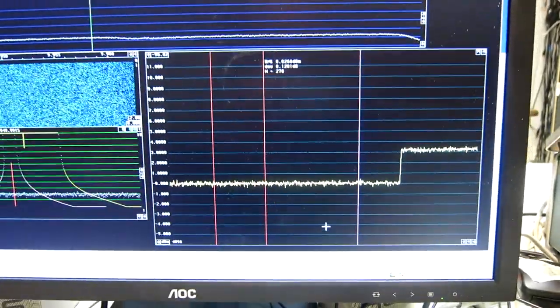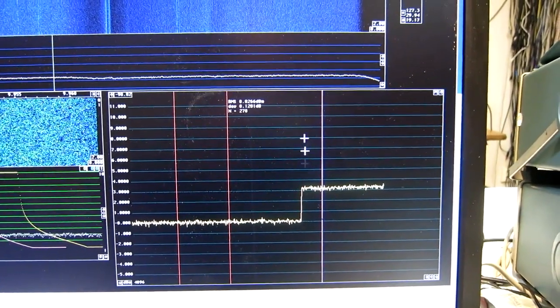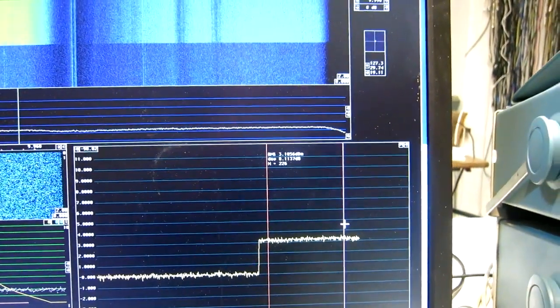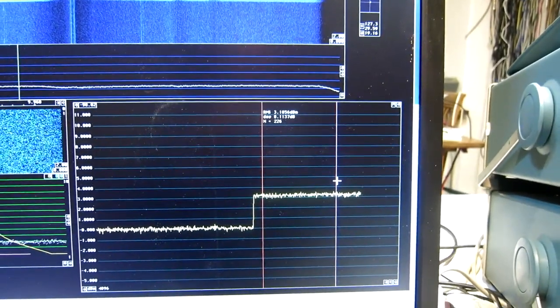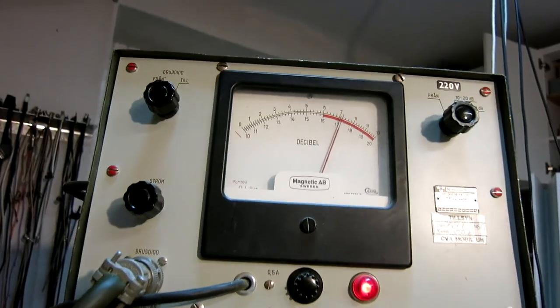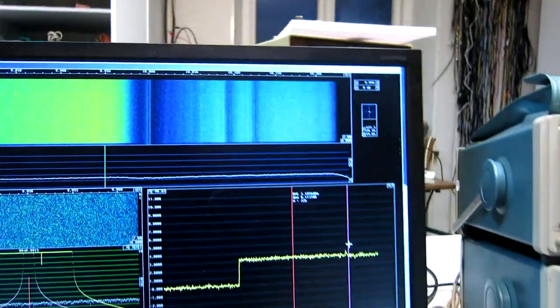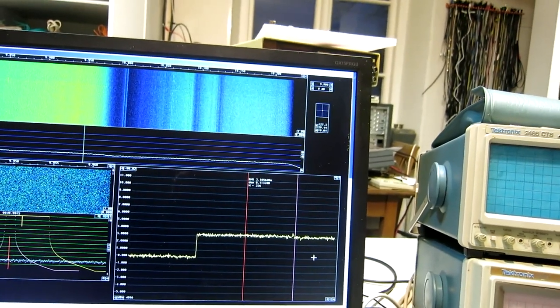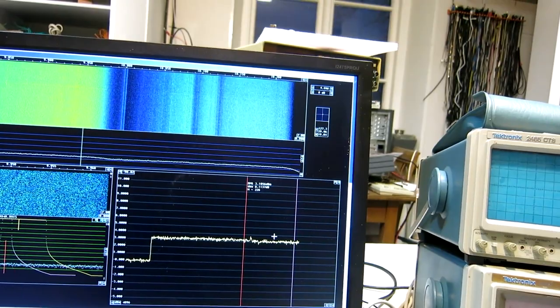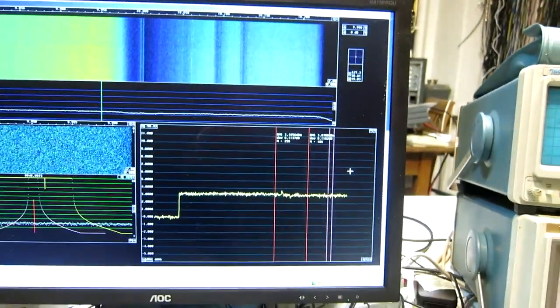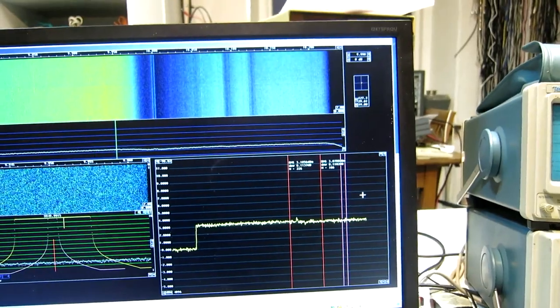And then here, with the noise source running, I have 3.18. So the noise is a little too high. The noise figure is a little better than 7.4. I try instead 7.2. And I have to wait a little. And then look here. 3.07. So I can say that the noise figure is 7.2 dB.